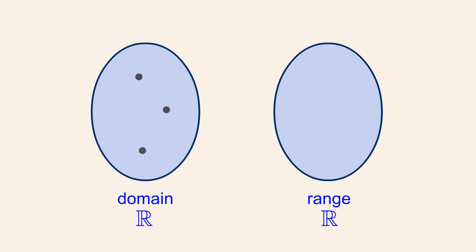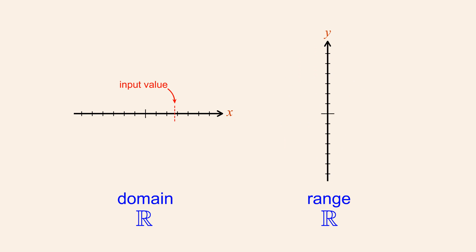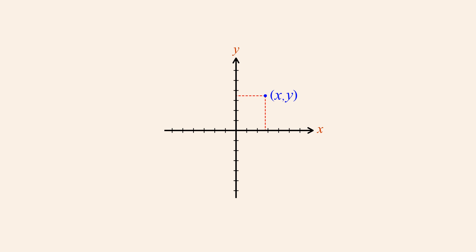We can think of a function as mapping elements of its domain to elements of its range. All functions have one domain and one range. In the Cartesian plane, the domain R corresponds to the one-dimensional space represented by the x-axis, and each possible value of x corresponds to a specific position on this axis. Likewise, a range of R corresponds to the one-dimensional space represented by the y-axis, and each possible value of y corresponds to some position on this axis. Together, these two positions locate a point in the Cartesian plane, and the collection of all the points in the function's graph is a curve in this two-dimensional space. The curve visually shows how values of the domain are mapped to values of the range.